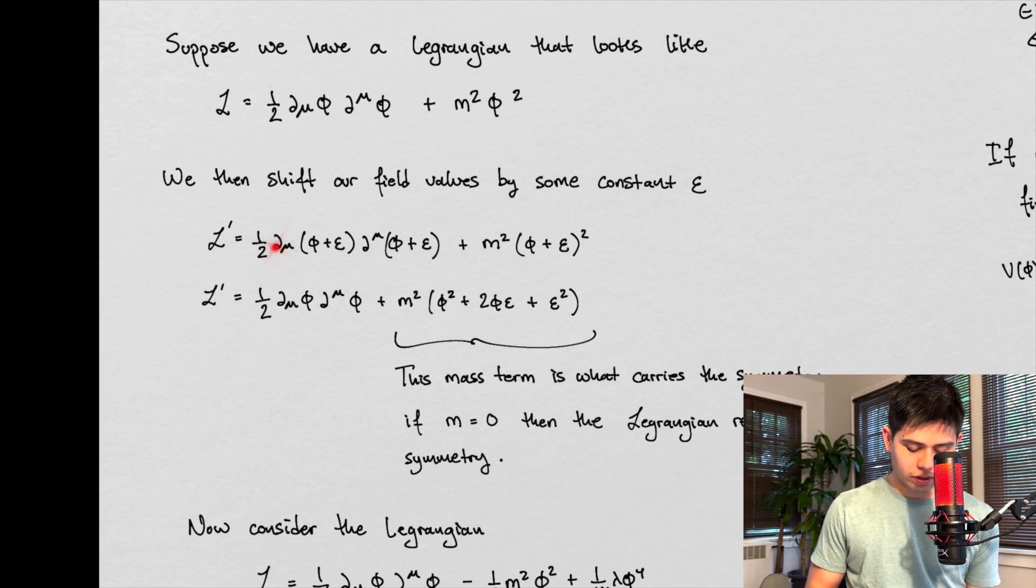Well, the derivative with respect to the derivative when applied to these constants, since they're just constants, they're going to be zero. So we recover the kinetic term. But with the mass term, or this potential term that has the mass in it, we don't recover the same mass term up here, right?